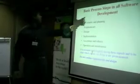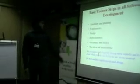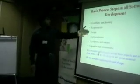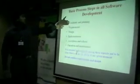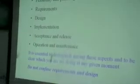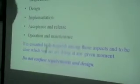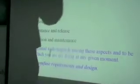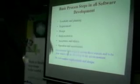I will briefly cover different sections of the software development process. The first one is feasibility and planning, the second is requirements, then design, implementation, and then acceptance and release, and finally operation and maintenance. These are the different sections we divide the process of developing good software into.